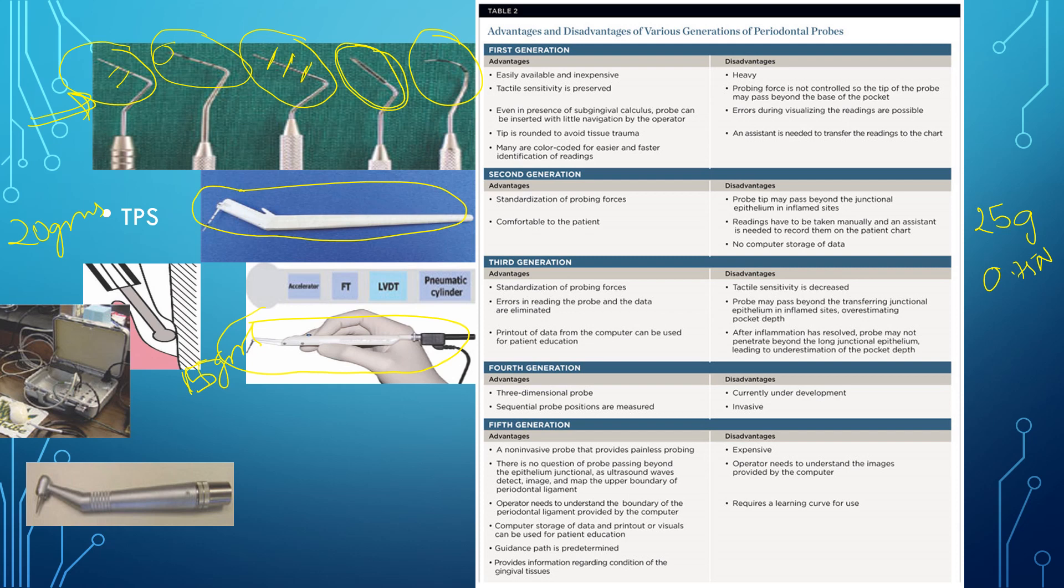The disadvantage of this third generation probes is that the tactile sensitivity is decreased and probe may pass beyond the junctional epithelium in sites which are inflamed. Now talking about the fourth generation probes, they are the three-dimensional probe. They are currently under development and no much of the data is available. It is still under research. But remember if they are asking the fourth generation probe, it is a three-dimensional probe and it is currently under development with the vision of obtaining a precise and continuous reading of the base of the sulcus or pocket.